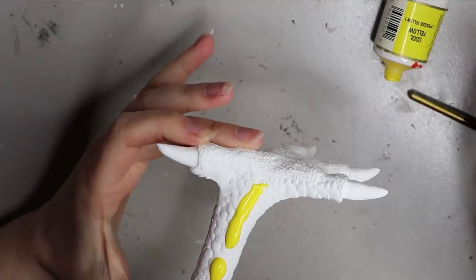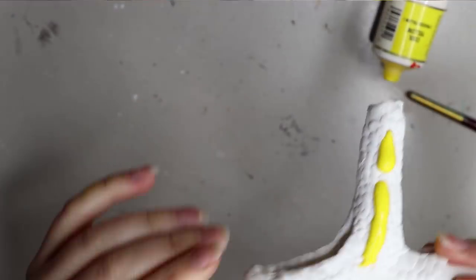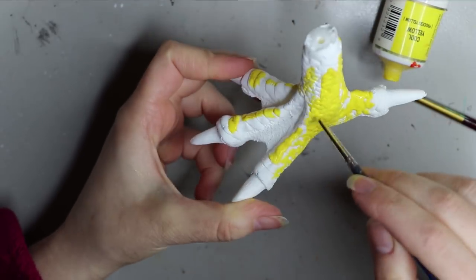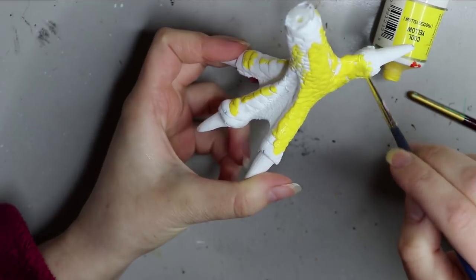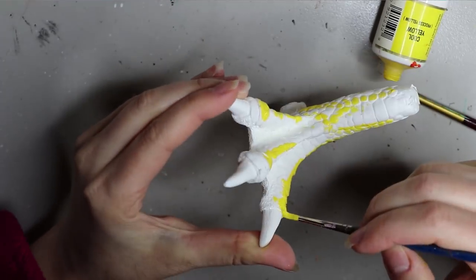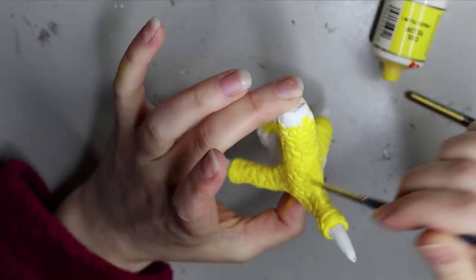Moving on to the claws. This is another resin piece that I have sculpted, molded and cast in resin. I'm using that same cool yellow as I did with the beak and I'm just going around painting the whole foot this yellow color to begin with, and then I'll go over and add some more colors and highlights.